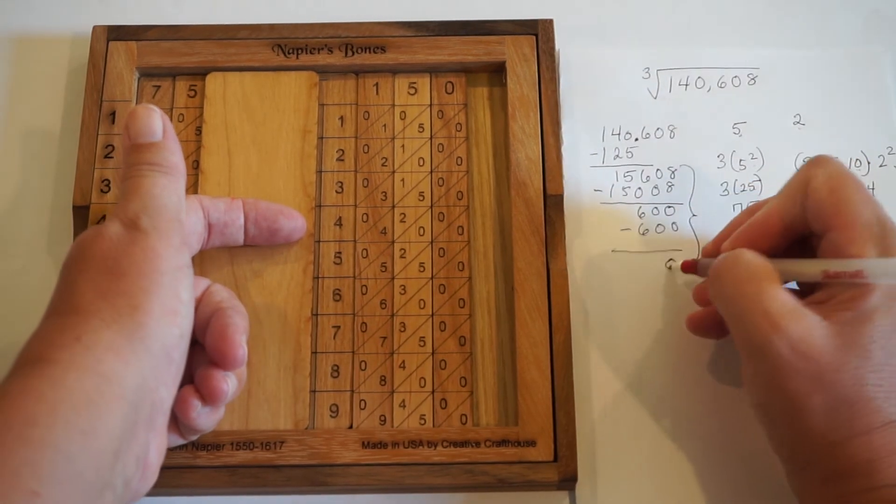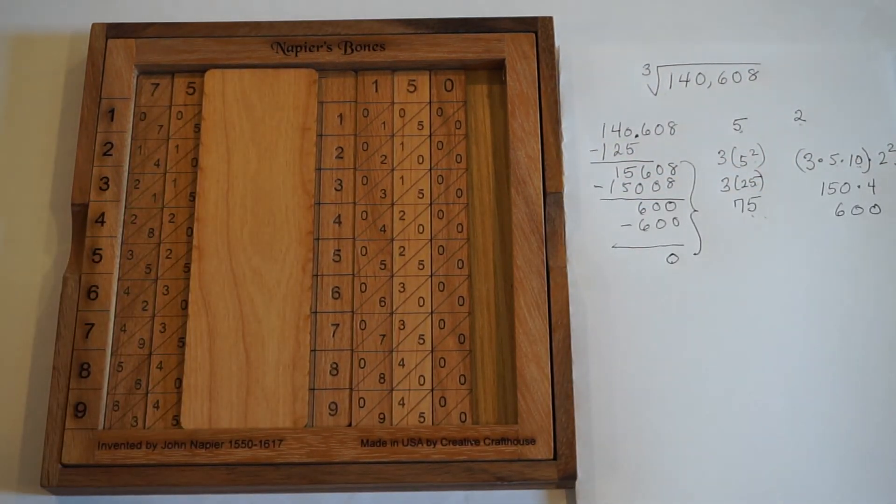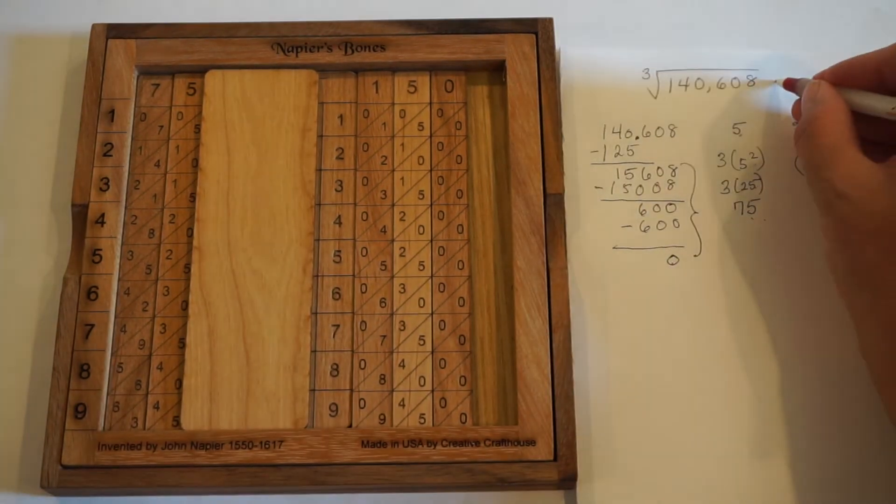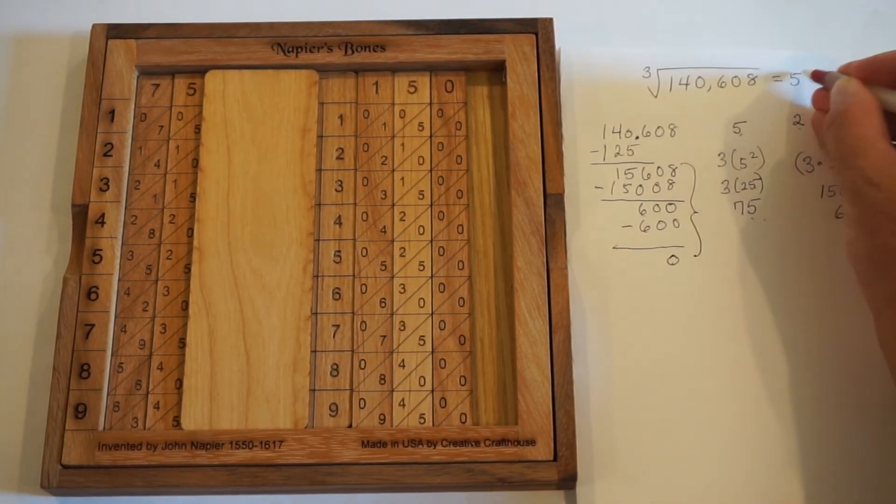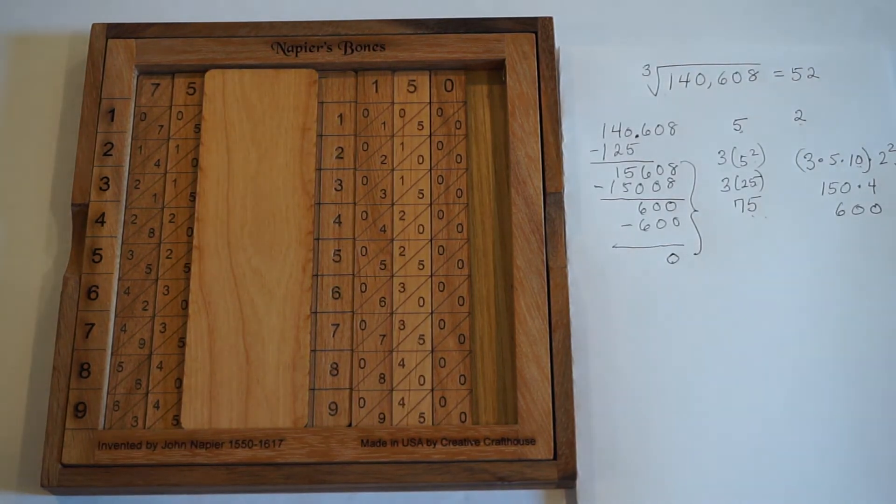That matches exactly, and that tells me that I've done this correctly, that my original number was a perfect cube, and the answer here is 52. So 52 cubed is 140,608.